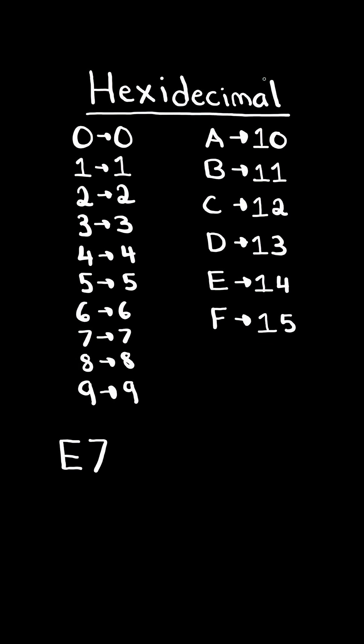For example, consider the hexadecimal number e7. To convert it to its decimal representation, we take the first number 7 and multiply it by 16 to the power of 0. And we add it to the number 14, which correlates to the symbol e, and multiply it by 16 to the power of 1. And this equates to its decimal representation 231.